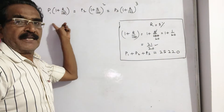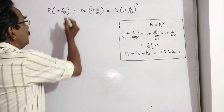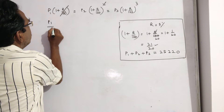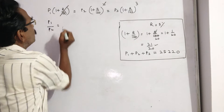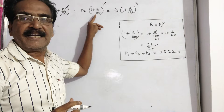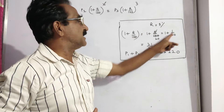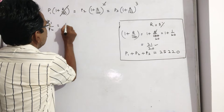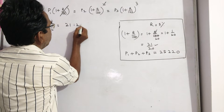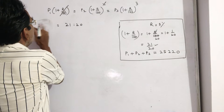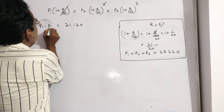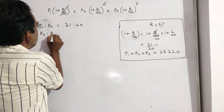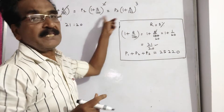These two are equal. P1 is to P2 is equal to 1 plus R by 100, which is 21 by 20. That is P1 is to P2 is 21 is to 20. Now let us find P2 is to P3 from these two.